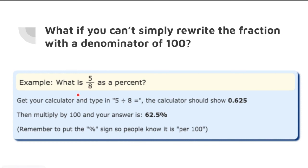So the answer would be dividing the numerator by the denominator. So if you will get your calculator and type in 5 divided by 8, you will see 0.625 or 625 thousandths. Then, you just need to multiply by 100 and your answer would be 62.5%. Why did we multiply this by 100?